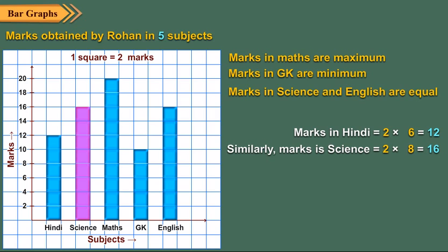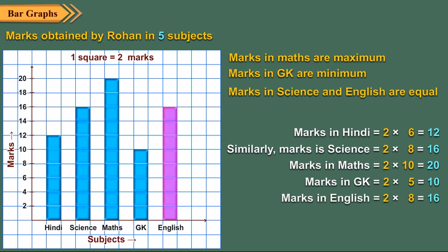Similarly, marks in science equals 2 times 8 which is 16. Marks in maths equals 2 times 10 which equals 20. Marks in GK equals 2 times 5 which is 10. And marks in English equals 2 times 8 which equals 16.